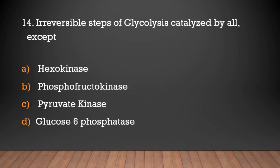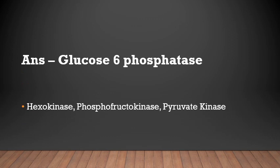Irreversible steps of glycolysis are catalyzed by all except: hexokinase, phosphofructokinase, pyruvate kinase, or glucose 6-phosphatase? Answer: Glucose 6-phosphatase. The irreversible steps of glycolysis are catalyzed by hexokinase, phosphofructokinase, and pyruvate kinase.